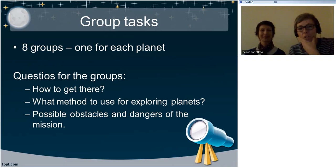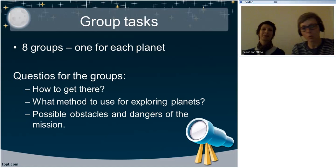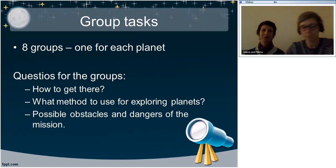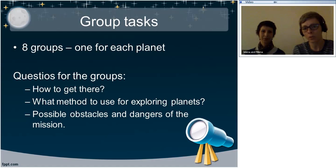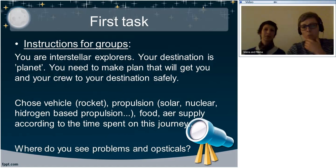There were seven groups, each assigned one planet of the solar system — Earth was excluded. The question for every group was: how to get to that planet? What methods to use for exploring the planet? What are the possible obstacles and dangers of the mission? This was the starting point of the project. After the introductory class, this is how they started their project, with three basic questions. Afterwards, some instructions were put in story form so it would be easier for students to get into the role of explorers and space travelers.